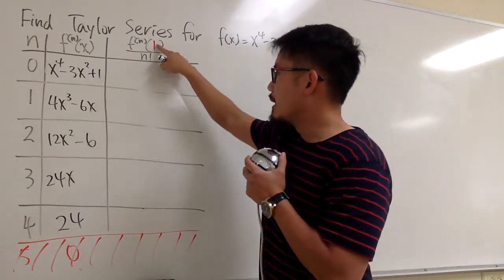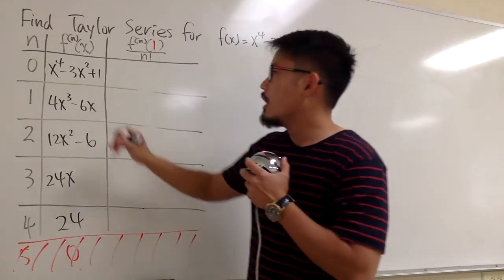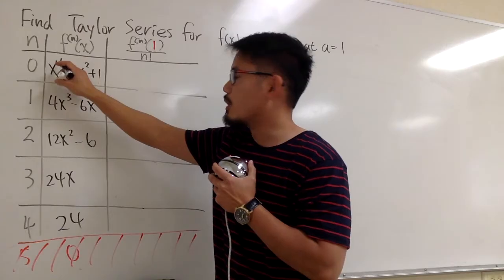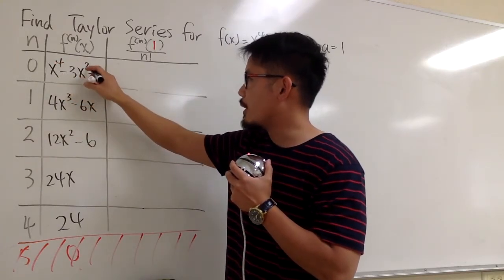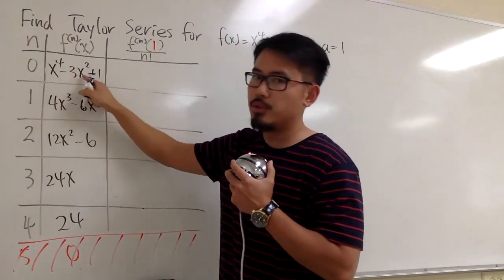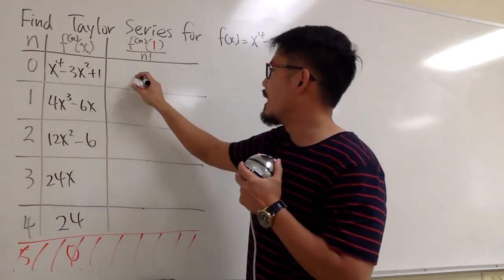For the first one, we will plug in 1 into this x and that x, and let's do the computations in our head. We will have 1 to the fourth power, which is 1, minus 3 times 1 to the second power. So we have 1 minus 3 pretty much. 1 minus 3 is negative 2. Plus 1, we will have negative 1.